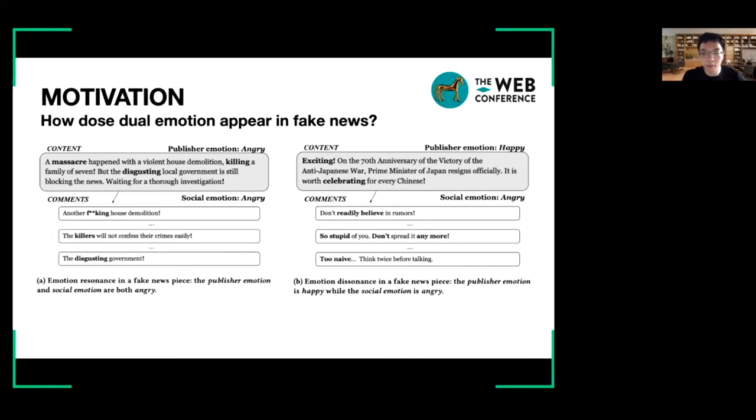After data observation, we found that there are some special emotion resonances or dissonances in fake news. For example, here are two cases in Chinese Weibo. The left case in the picture shows a more common resonance of fake news pieces, where the publisher and social emotion are both angry. The content of this fake news fabricates an event about a massacre during a house demolition, and the publisher conveys its rage with expressions like cursing and disgusting. As a result, the great indignation of the crowd is invoked.